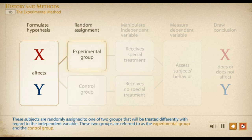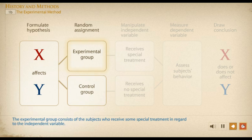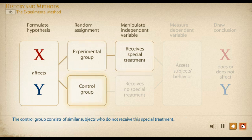Subjects are randomly assigned to one of two groups that will be treated differently with regard to the independent variable. These two groups are referred to as the experimental group and the control group. The experimental group consists of the subjects who receive some special treatment in regard to the independent variable, while the control group consists of similar subjects who do not receive this special treatment.